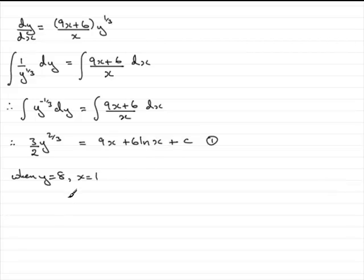By doing that, we've got 3 over 2 times y which is 8, so 8 to the power 2 thirds, equals 9 times 1 plus 6 times the natural log of 1 plus the constant c.